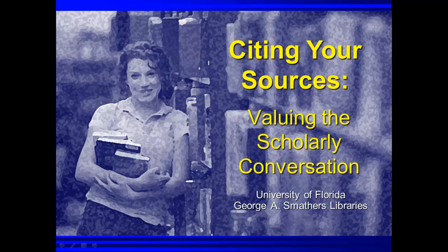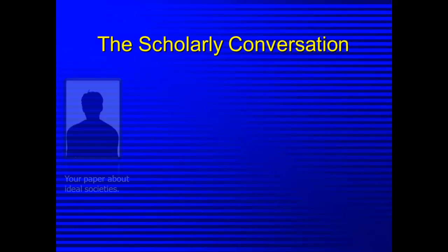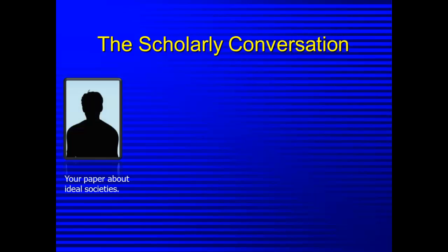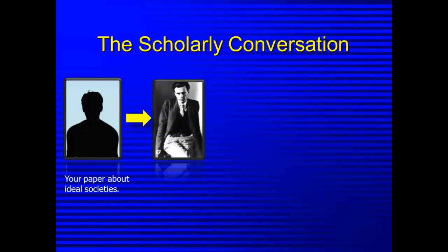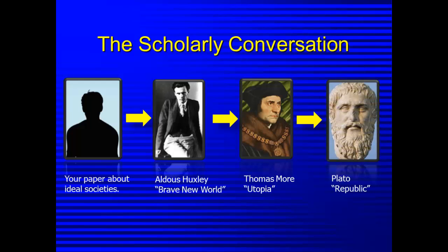When you write a paper for a class, your ideas don't form in a vacuum. Ideas are passed from scholar to scholar, refined, revised, and reformed in a process called the scholarly conversation. For example, if you are writing a paper about ideal societies, you would first research what other authors and scholars have written about this topic. After carefully examining, comparing, and or synthesizing what others have written, you add your own ideas. However, you must credit the original authors of these sources by citing them.